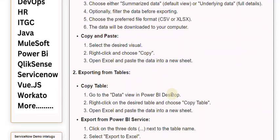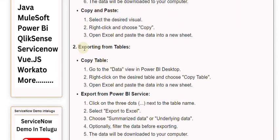2. Exporting from Tables. Copy Table: 1. Go to the Data View in Power BI Desktop. 2. Right-click on the desired table and choose Copy Table. 3. Open Excel and paste the data into a new sheet.